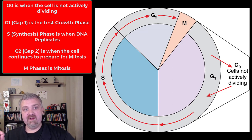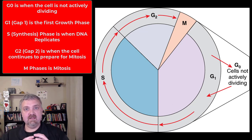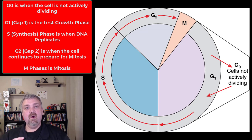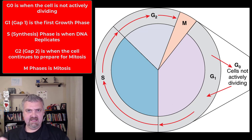G1 phase stands for gap 1 phase. This will be the first growth phase in a new cell life cycle. During G1, this is going to be during interphase when the cell is growing and carrying out its own functions. G1 might be a very long time — might be forever if a cell is not going to divide — or it might be a short period of time for cells that divide very quickly. The biggest variability between different types of cells will be how long this G1 phase is.